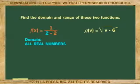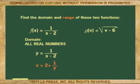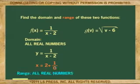Now, to find the range for this function, we have to set it up to make the value of x undefined. To do this, we set the function in terms of y so that y equals 1 over x minus 2. Solving for x, x becomes 2 plus 1 over y. Again, the variable lands in the denominator, and dividing by zero is the way to get x undefined. So, the range is all real numbers except zero.